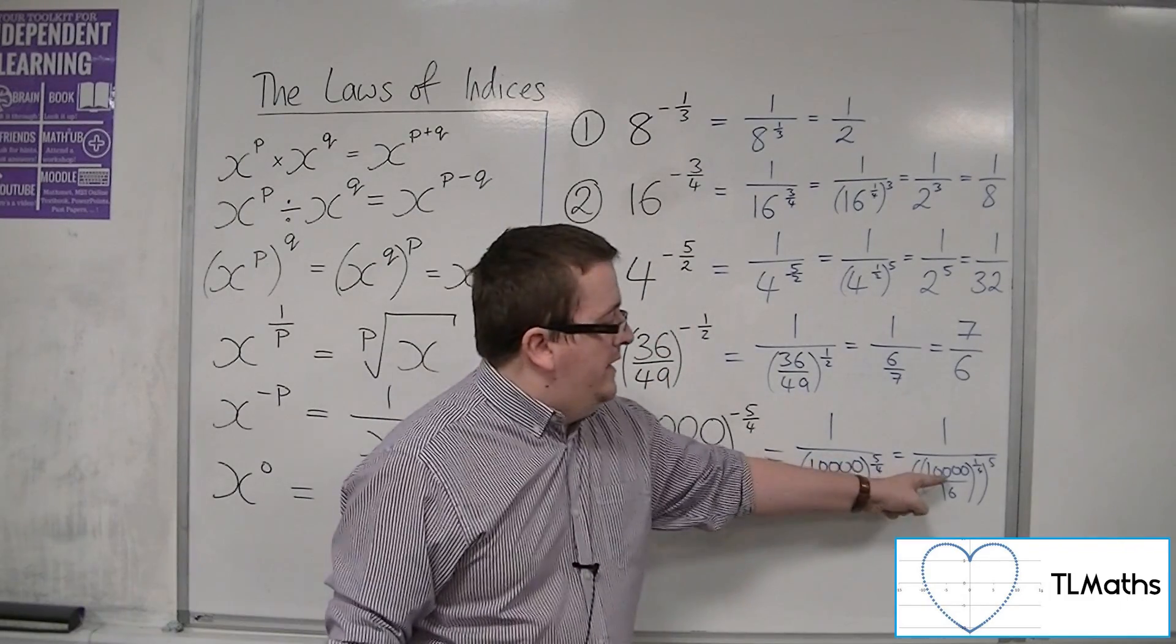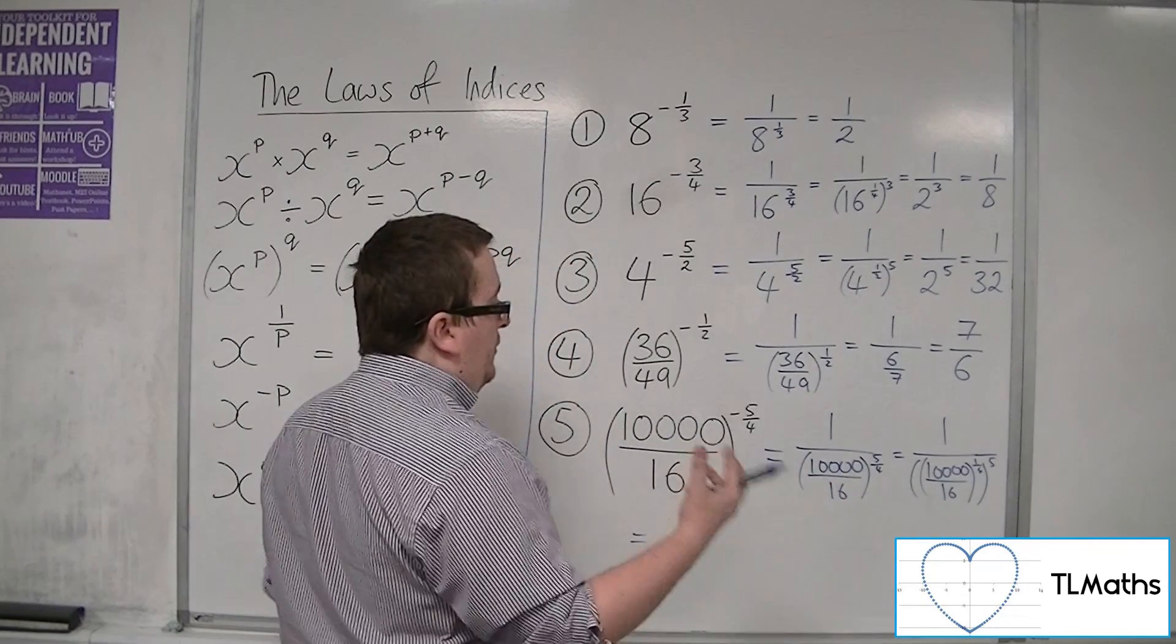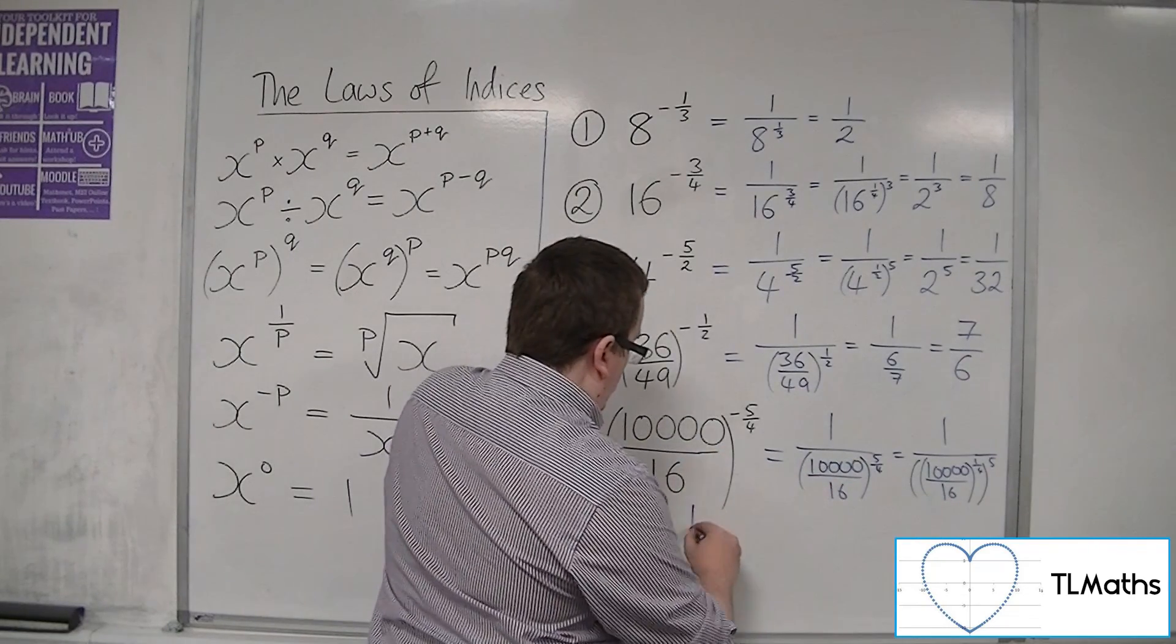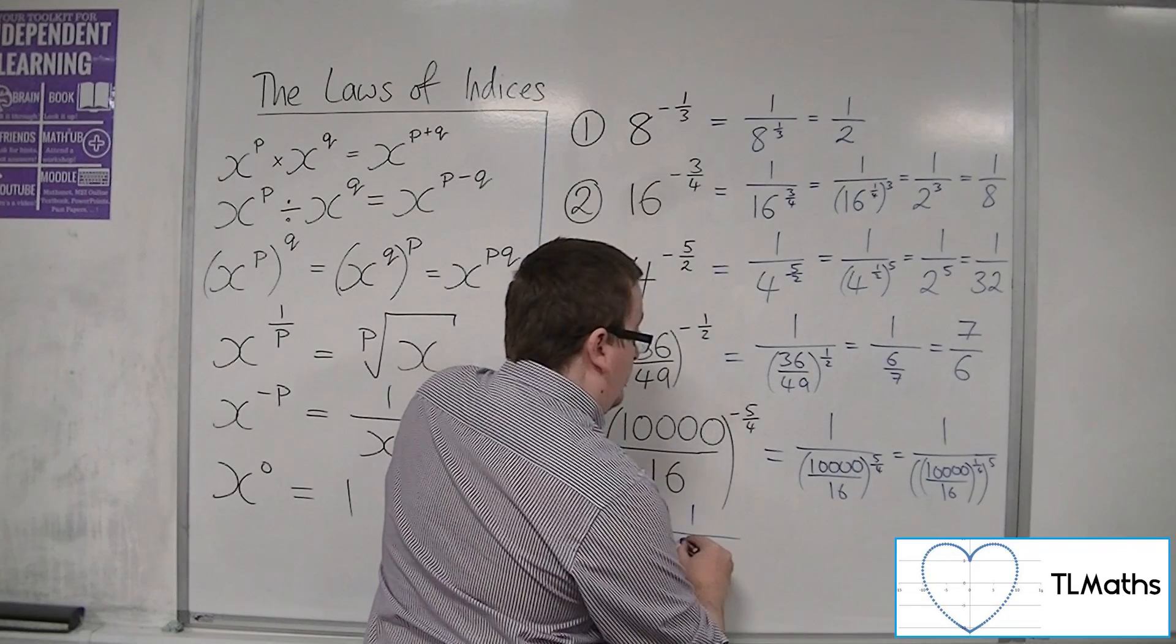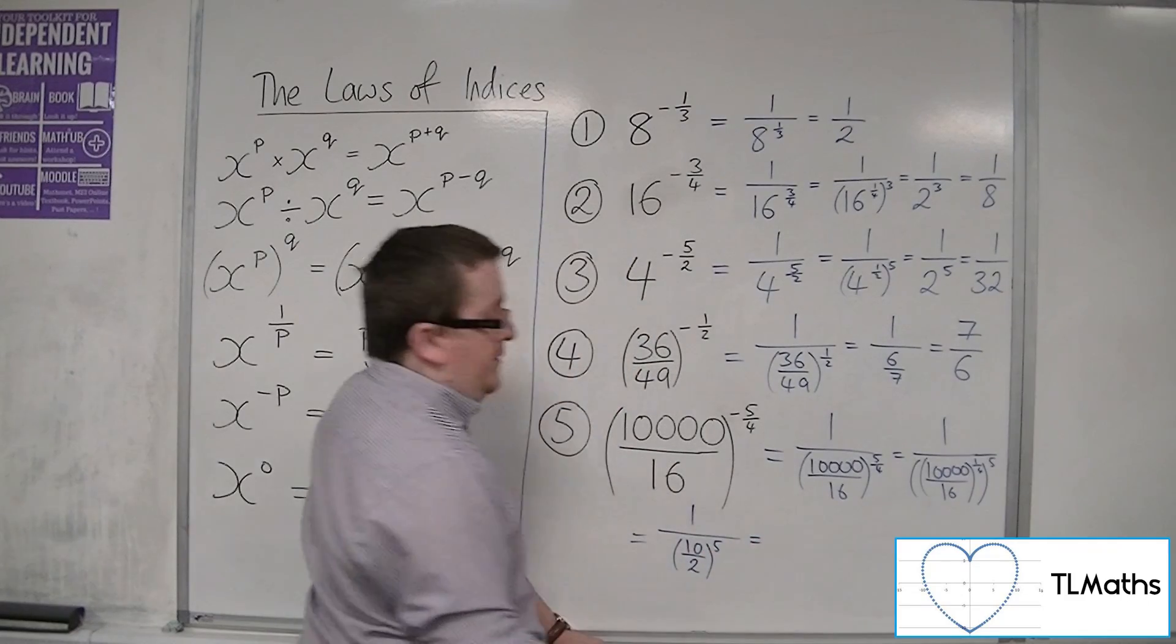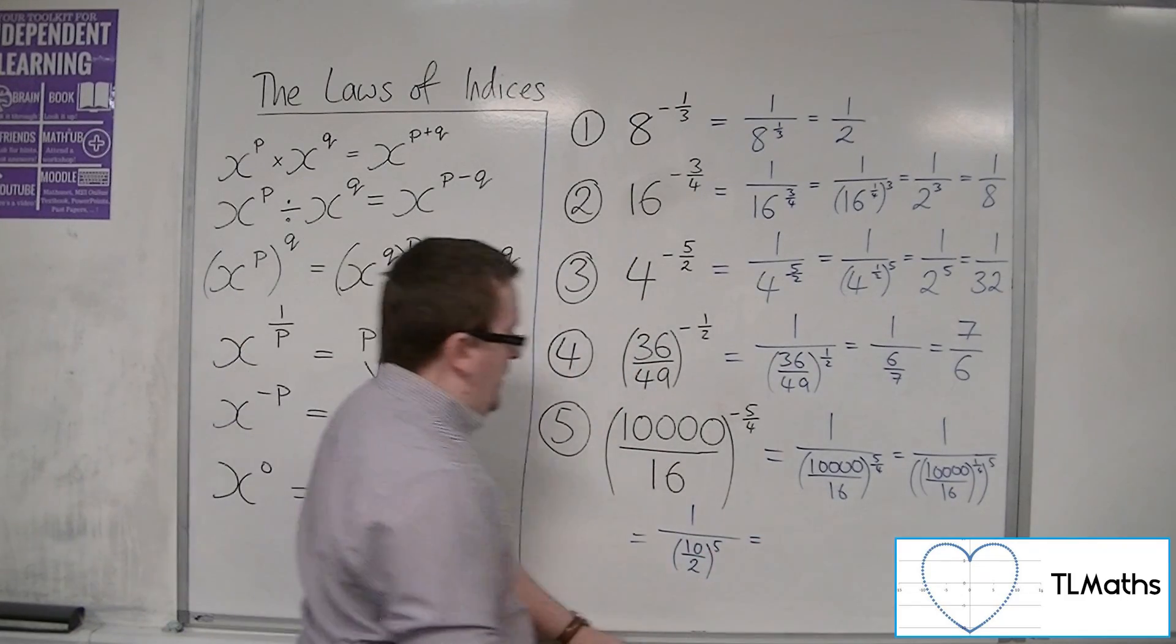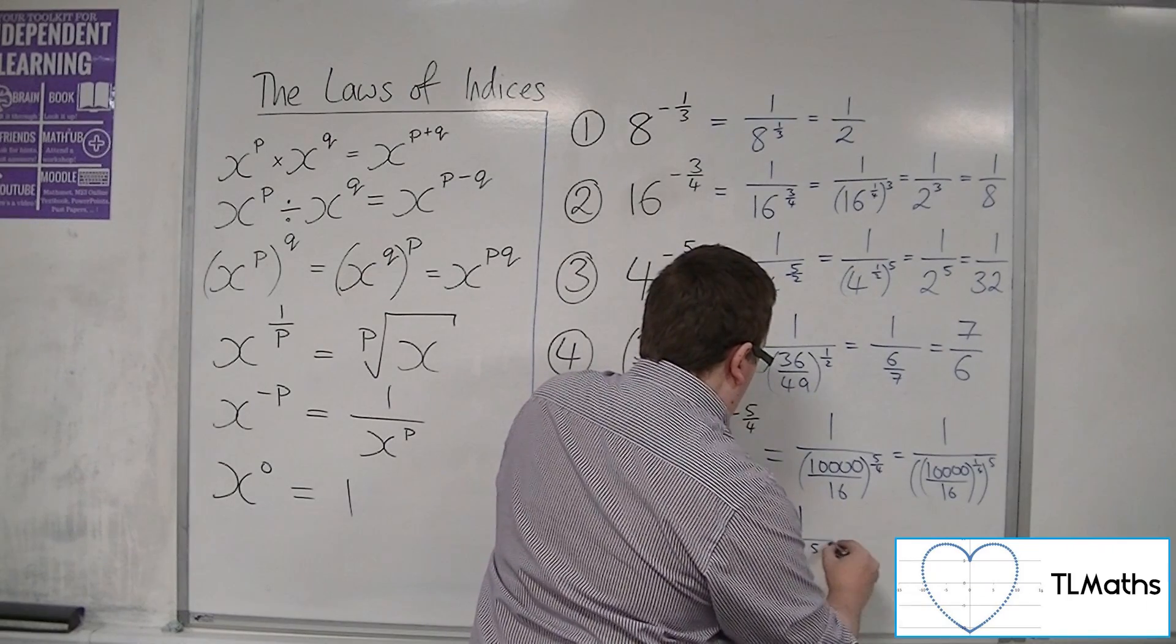Now the fourth root of 10,000 is 10. The fourth root of 16 is 2. So you've got 10 over 2 to the power of 5. Now 10 over 2 is just 5. So that's 1 over 5 to the power of 5.